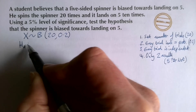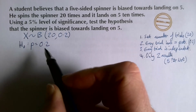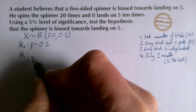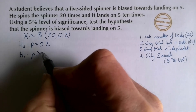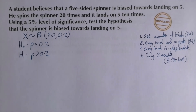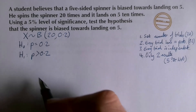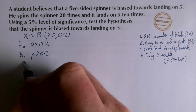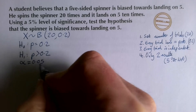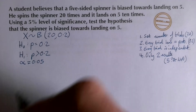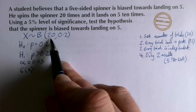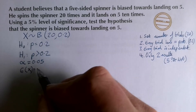This student thinks the spinner is biased towards landing on five, so the alternate hypothesis is p > 0.2, which means we have a single-tailed test. You get a double-tailed test when you're just saying it's not 0.2 — it could be more or less. The significance level α = 0.05, i.e. five percent. The expected mean is 0.2 × 20 = 4.